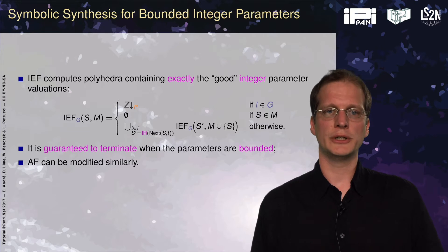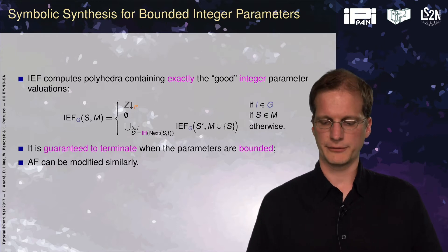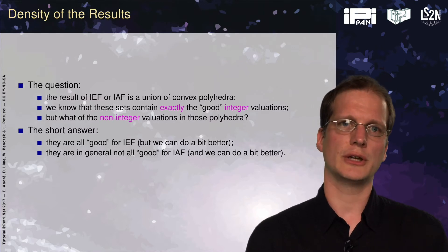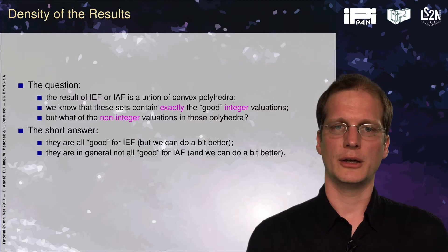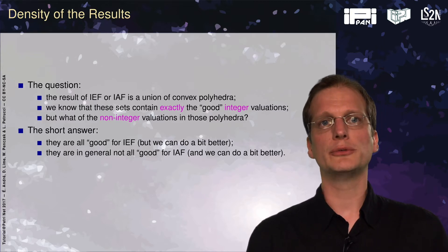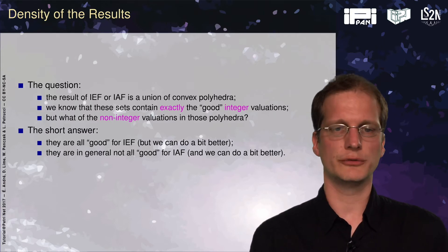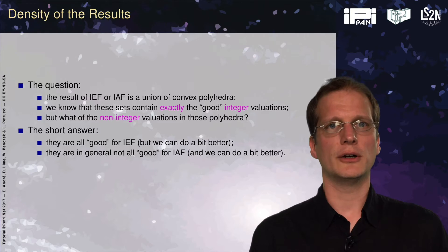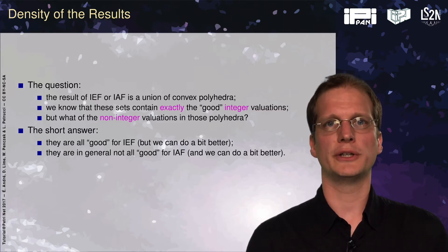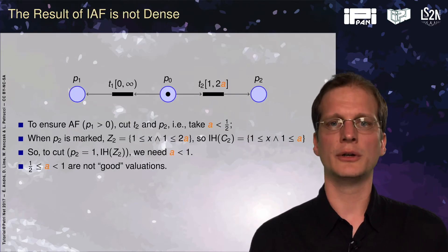The algorithm terminates and gives exactly the integer parameter valuations. We can do the same for AF. We can ask whether the result — a union of convex polyhedra — gives us not just the integer points but also surrounding rational points as valid valuations. For EF reachability, every point inside the polyhedra is a good valuation. But this is not true in general for AF, and we will now see a small counterexample.